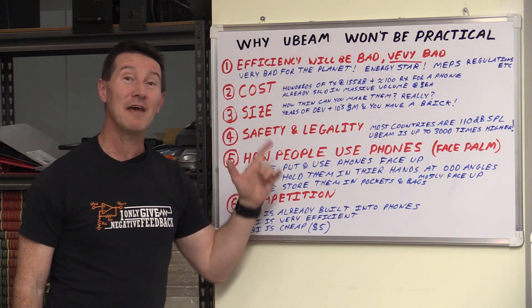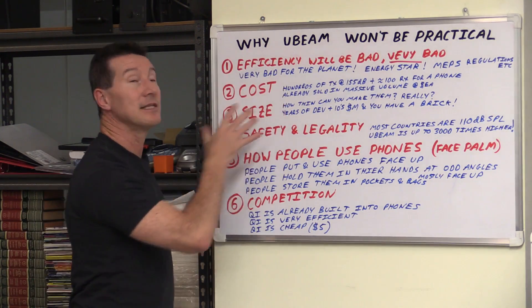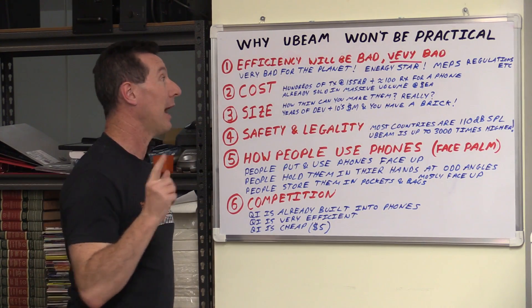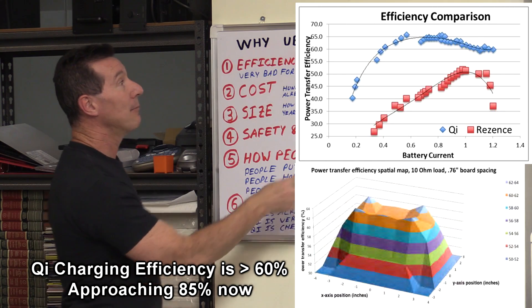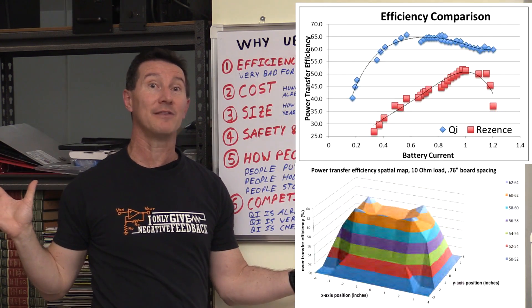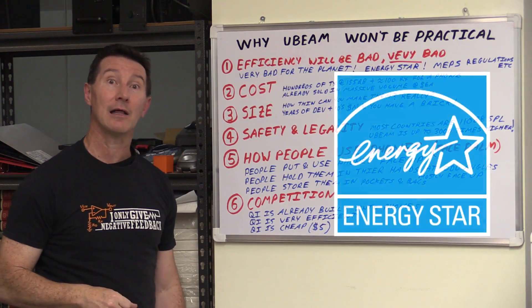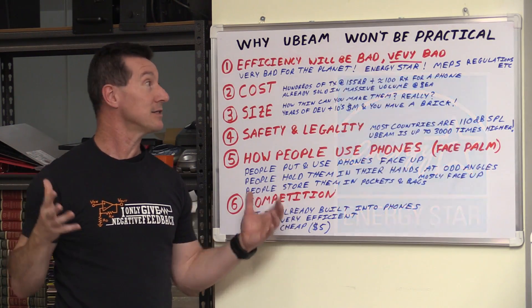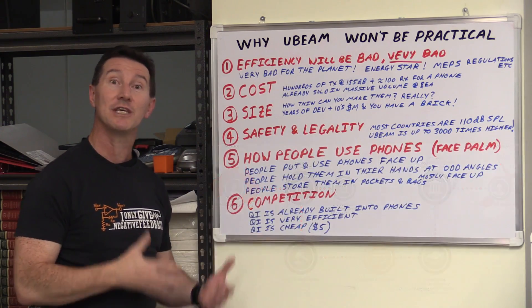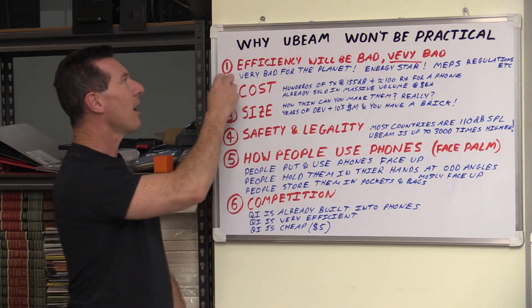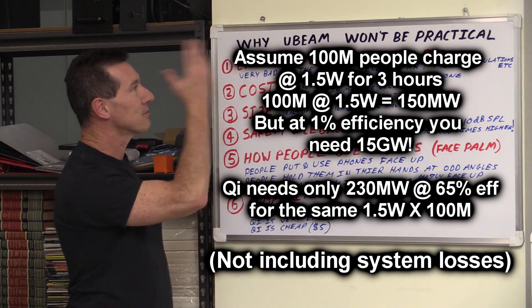This is why uBeam will never work or any ultrasonic charging technology. Number one, the efficiency. It's going to be bad. If it's one percent, I'll eat my tin foil hat at four meters. It's the worst efficiency charging technology by an order of magnitude on the market. It's going to be very bad for the planet. If everyone implemented this, the planet would be screwed. Energy consumption is one of the biggest problems we have. Energy Star legislation, MEPS regulations - you're not allowed to sell inefficient chargers. So right off the bat, this thing shouldn't have even made it past the first concept.